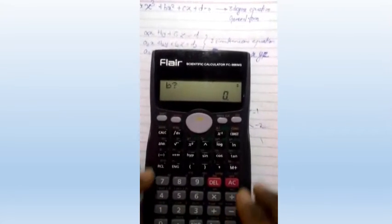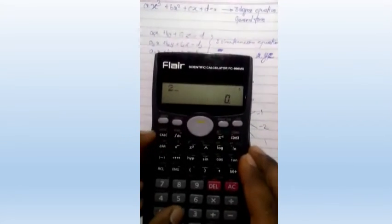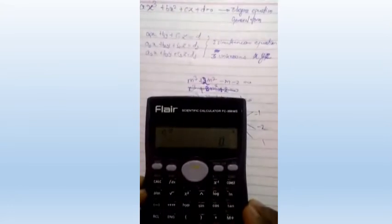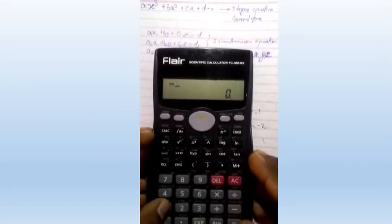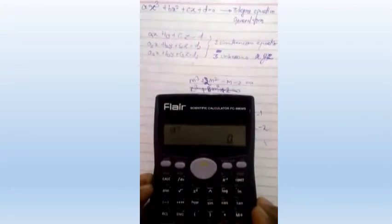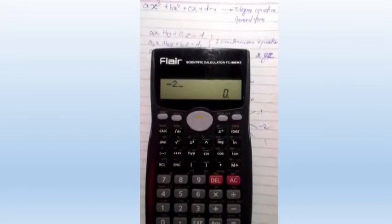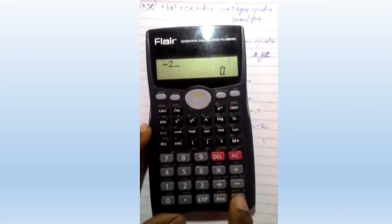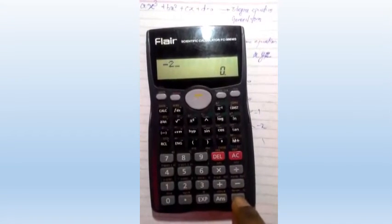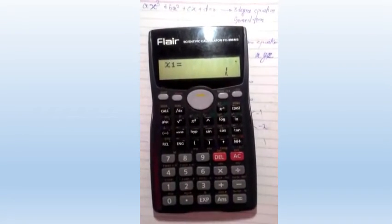And b is 2, c is -1, and d is -2. After each value, you have to click on equals to assign that value to that coefficient.